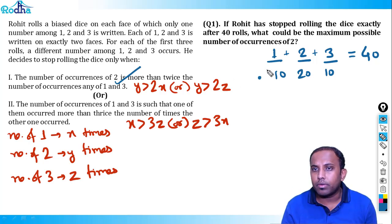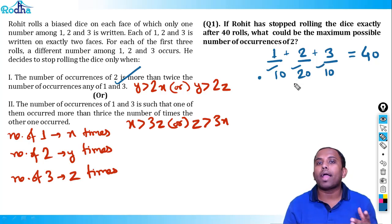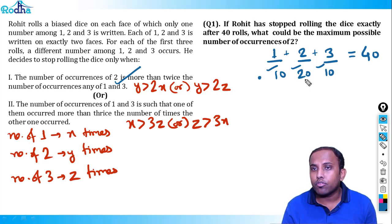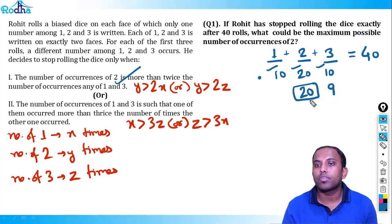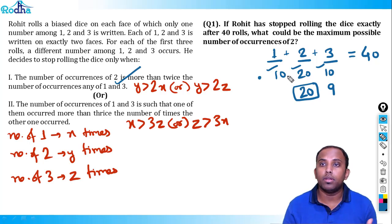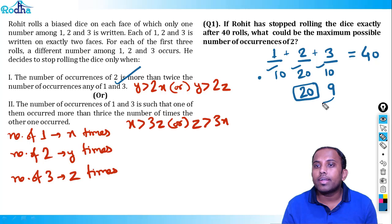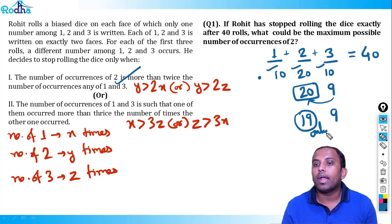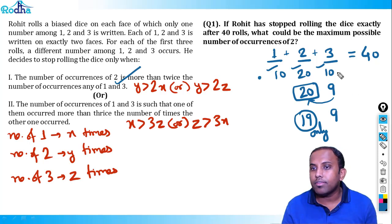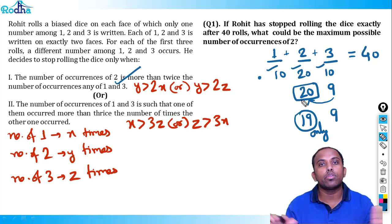So y cannot be 20 or more. Let's check if y = 19 works. For y = 19 to stop the roll, we need some value where y > 2 × (that value). If z = 9, then 2z = 18 and 19 > 18, so the dice stops at y = 19. Checking totals: 19 + 9 = 28, so number of 1 = 12. We get 12 + 19 + 9 = 40. This satisfies the condition.